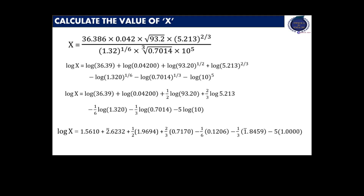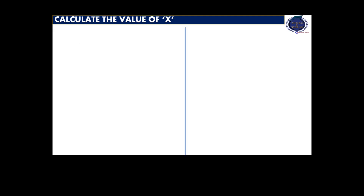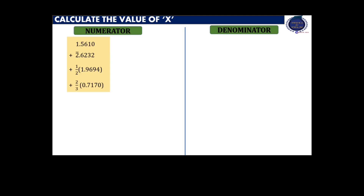In order to understand how to calculate the value of log x, we are going to consider the numerator and denominator of the given formula separately. First, let us consider the numerator. There are four terms given in the box. The multiplication of 1.9694 with 1/2 and 0.7170 with 2/3 can be done using simple arithmetic. When adding them, we have to remember that the mantissa for each term will be positive, whereas the characteristic can be both positive and negative. Hence we are going to add them separately.